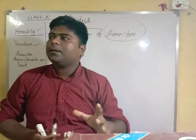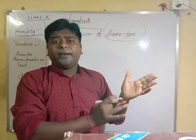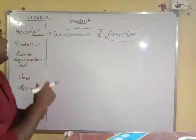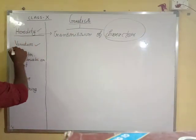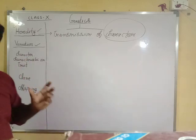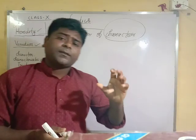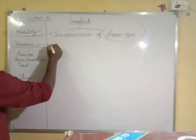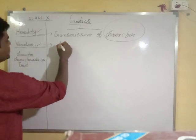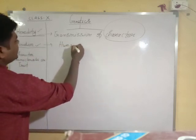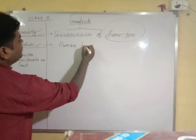The next term is variation. We need to understand variation with a simple logic. We know that there are human beings, there are plants, and there are animals — and they all have their populations.